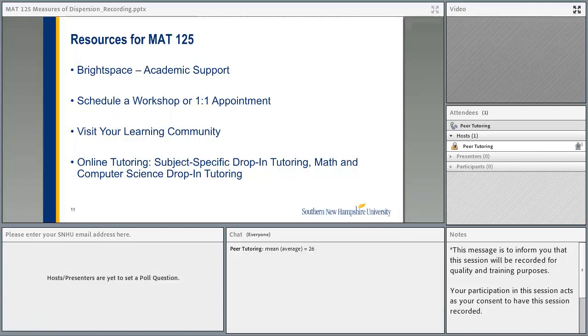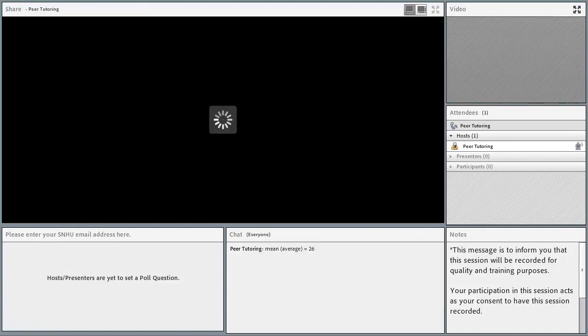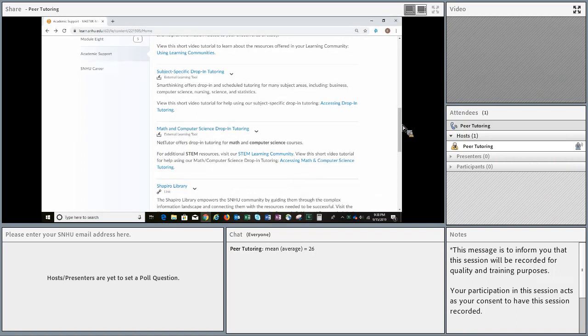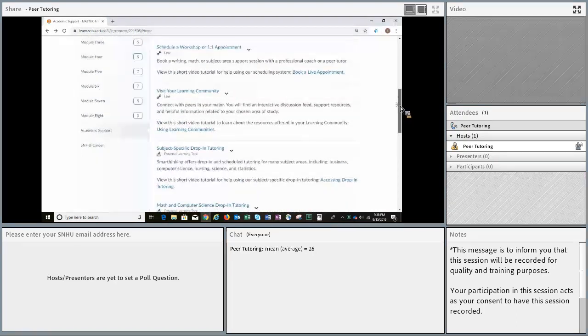So some of the things that we've talked about before, we have some resources for MAT 125. Right in your course in Brightspace, you can look for academic support. And within academic support, you can schedule a workshop or a one-on-one appointment. Most of the workshops now are drop-ins. You can visit your learning community where you can also access one-on-one appointments and also drop-ins and a workshop calendar. And we also offer online tutoring, subject-specific drop-in tutoring, math and computer science drop-in tutoring. So I'm going to take a quick minute just to get you right in your course in Brightspace just to show you all of this.